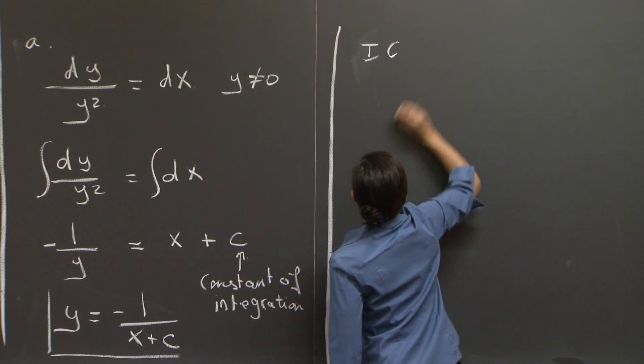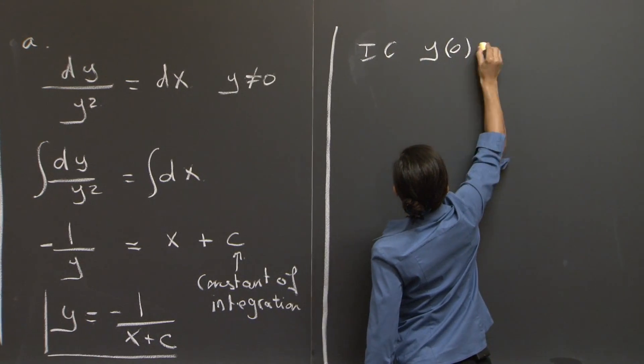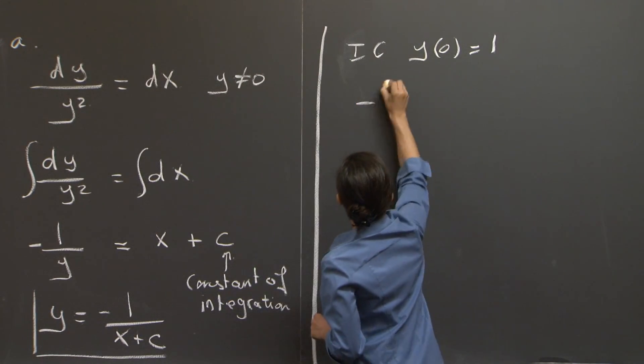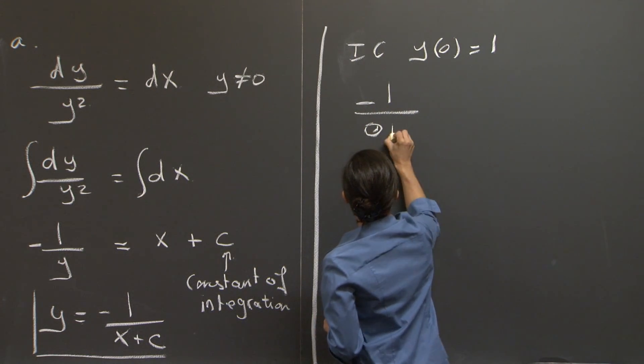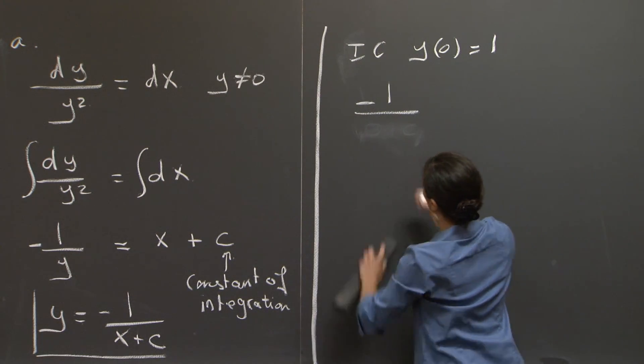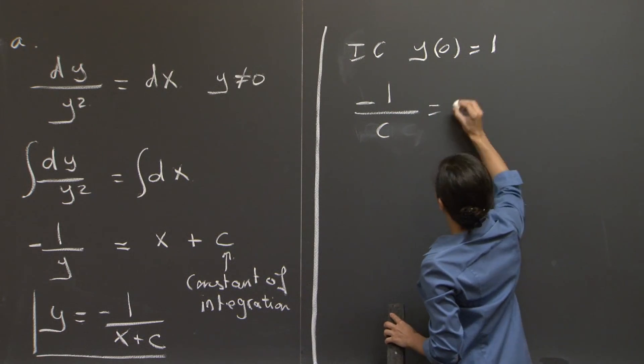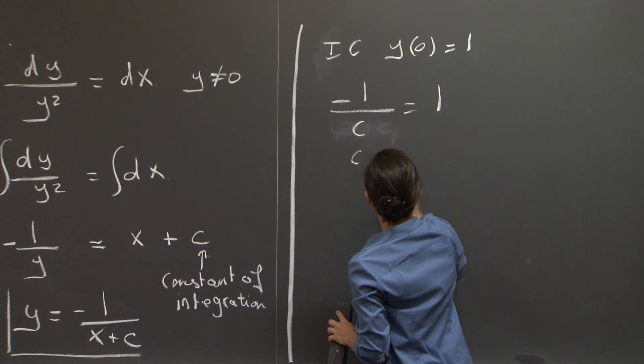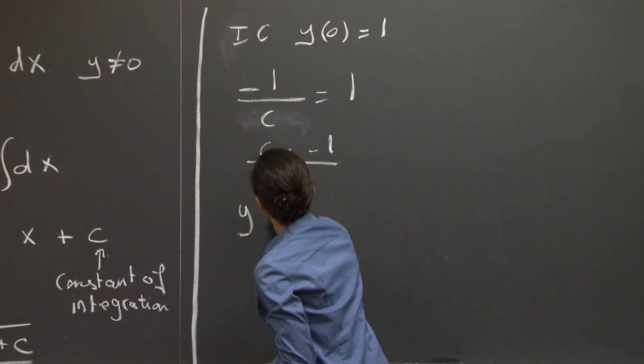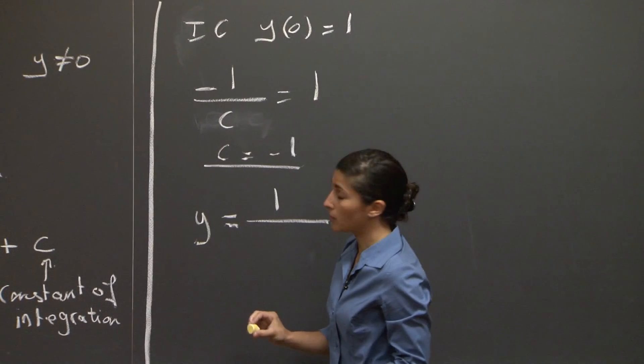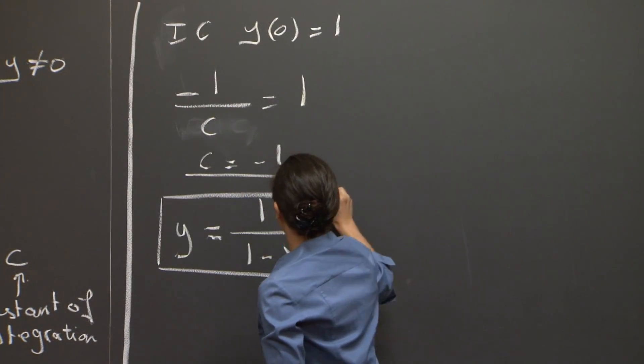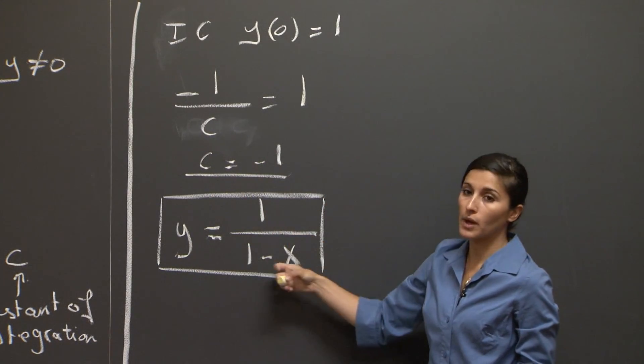Our initial condition was y(0) equals 1. So if we substitute this in the expression that we just obtained, we just have 0 plus c, which then only gives us c equals to 1. So we end up with a value for our constant of integration, c equals to minus 1. And so the solution to this problem is y(x) equals 1 over 1 minus x.